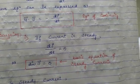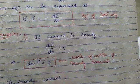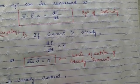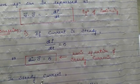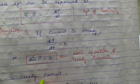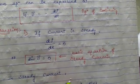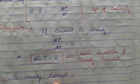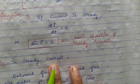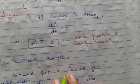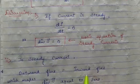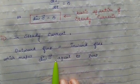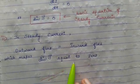For steady current, the equation of continuity describes the fact that the total flux through a closed surface is equal to the decrease of charge in the volume bounded by it. In steady current, the outward flux equals the inward flux, which makes the divergence of J equal to zero. I hope you understand the equation of continuity.